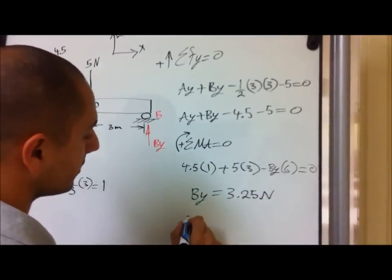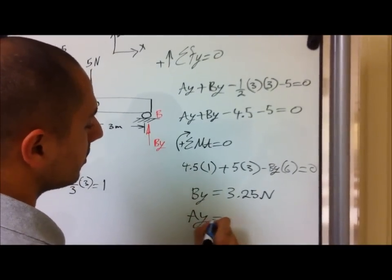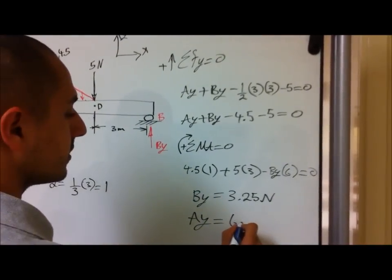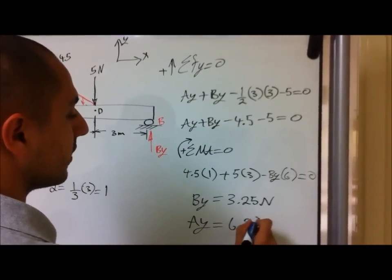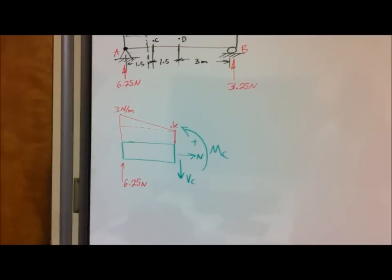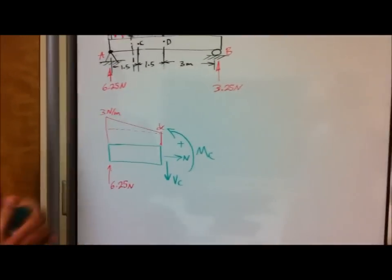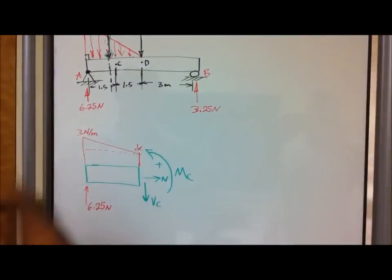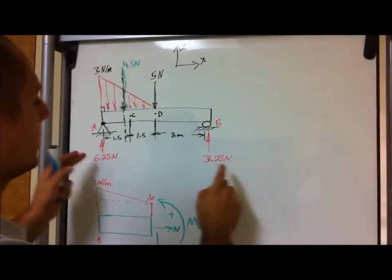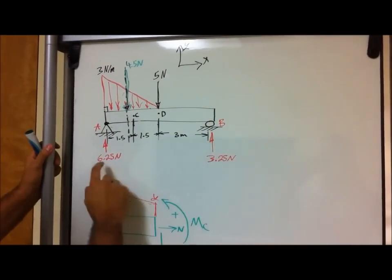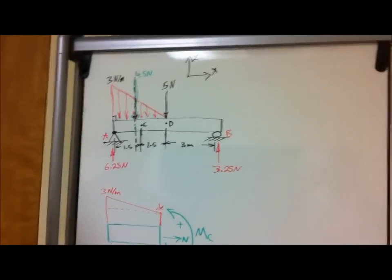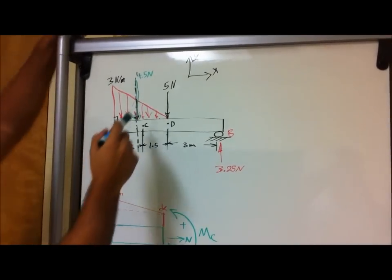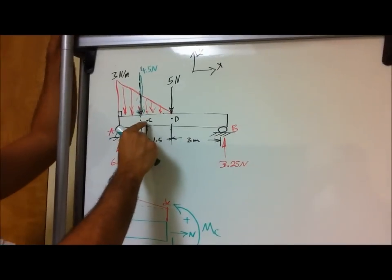From that, you can get A-Y, which equals 6.25 N. So I showed you how to calculate the reactions — we got 3.25 and 6.25. From there, we are going to solve for the internal shear and moment at point C.